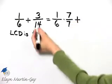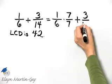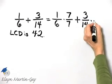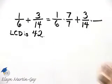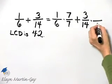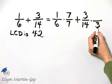But let's go ahead and work on 3 over 14. And I ask myself the same question. 14 times what gives a product of 42? Well 14 times 3 gives a product of 42.